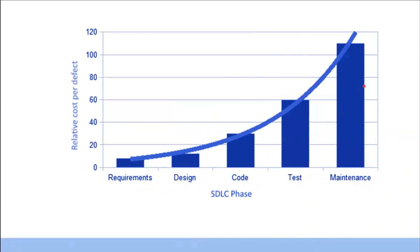As you move towards the end of your software development lifecycle, the cost of finding and fixing defects increases. If you are able to find a bug at the requirement phase, the cost is very low. As you move to the design phase, cost increases a bit, and as you move to implementation, costs keep on increasing.